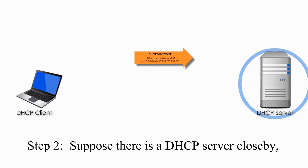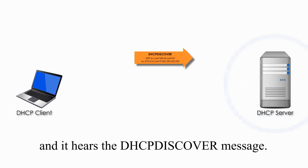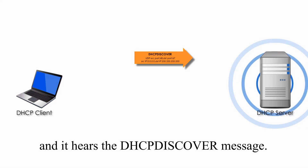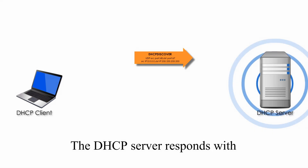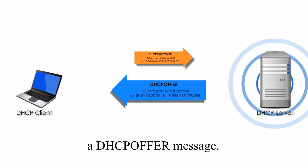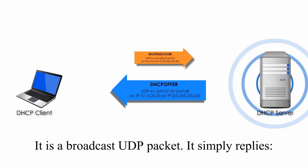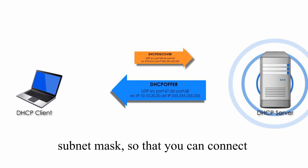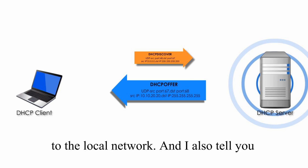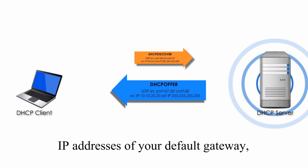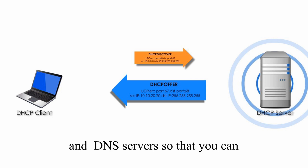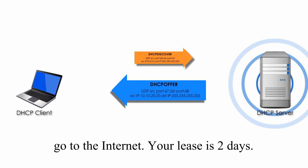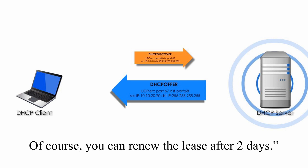Step 2: suppose there is a DHCP server nearby and it hears the DHCP Discover message. The DHCP server responds with a DHCP Offer message. It is a broadcast UDP packet. It simply replies: 'I hear you. I can lend you this IP address and this subnet mask so that you can connect to the local network, and also give you the IP addresses of the default gateway and the DNS server so that you can go to the internet. Your lease is 2 days, and of course you can renew the lease after 2 days.'